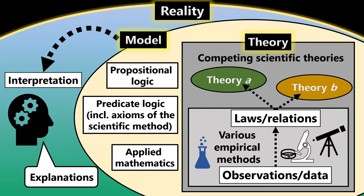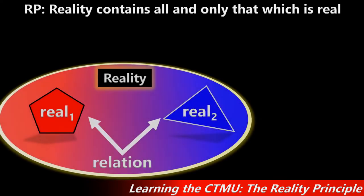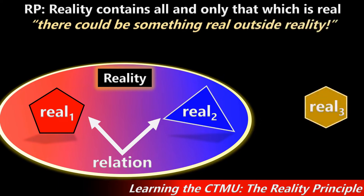To proceed, we need a much more general theory, which must in turn be based on the most general of relations — general enough to encompass the whole of reality. The reality principle, a definition of reality elementary to the CTMU, states that for something to be real it has to be contained by reality. This can be proven by contradiction, since any objection to it is self-contradictory. An objection sometimes suggested is that there might be something real outside reality.